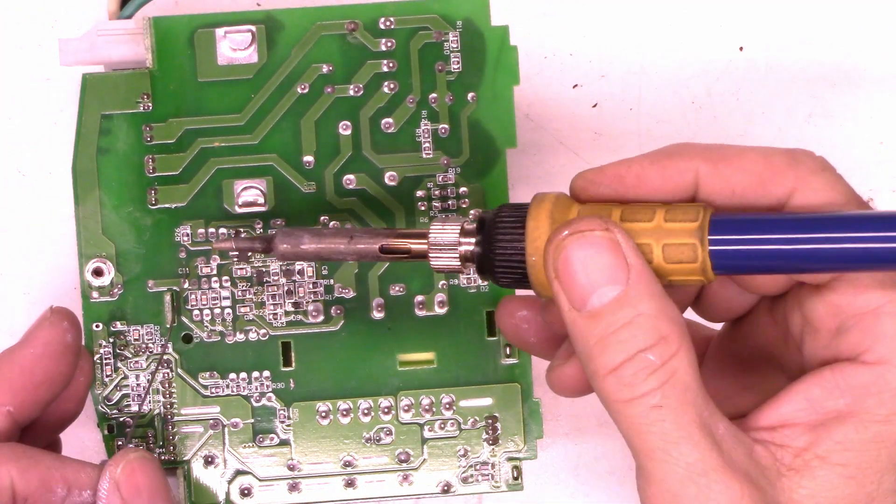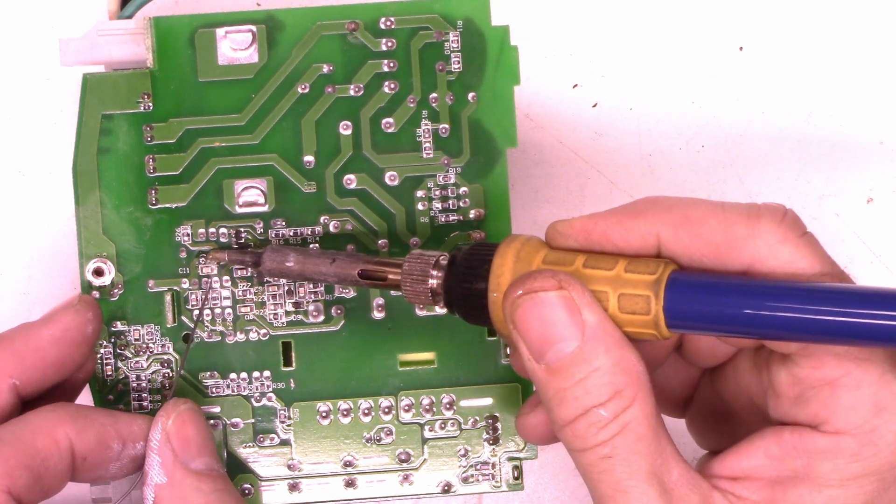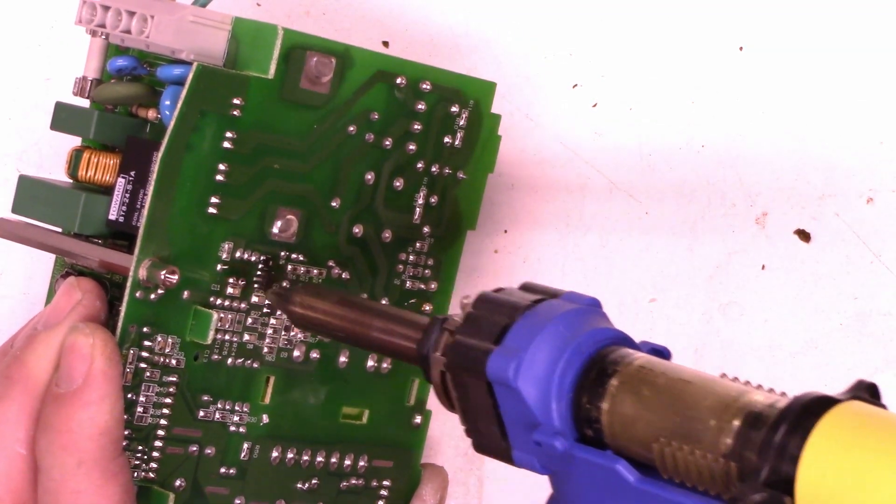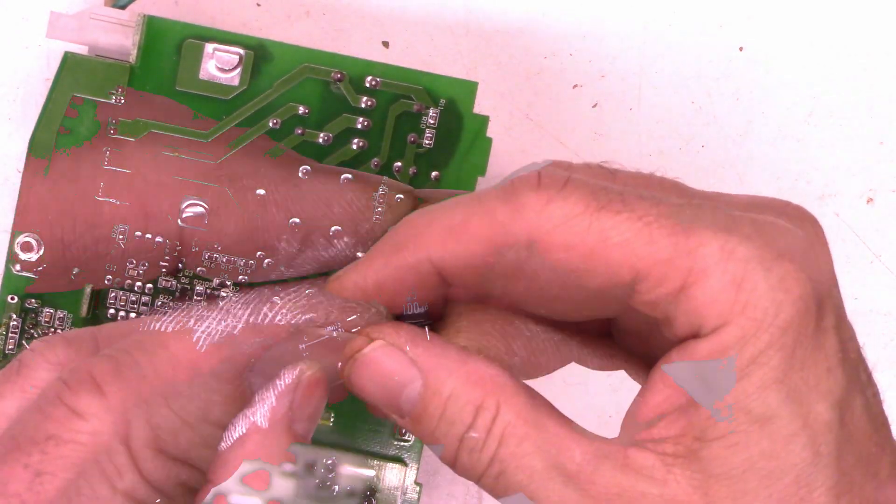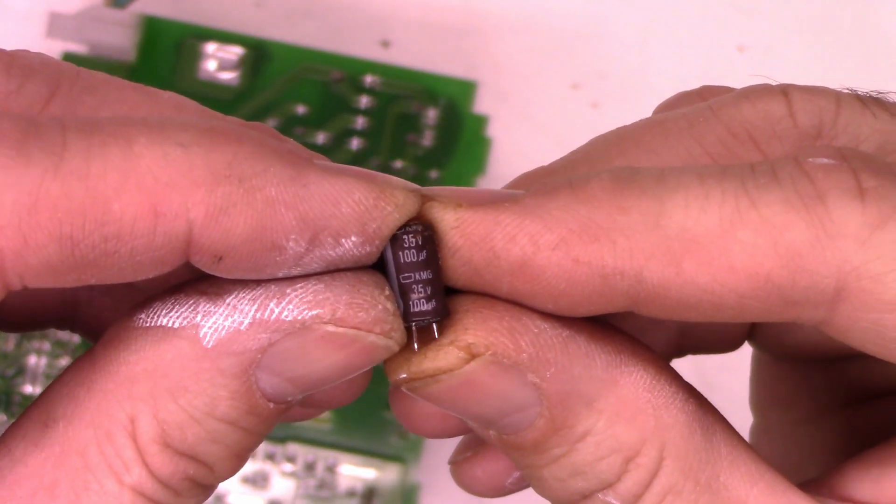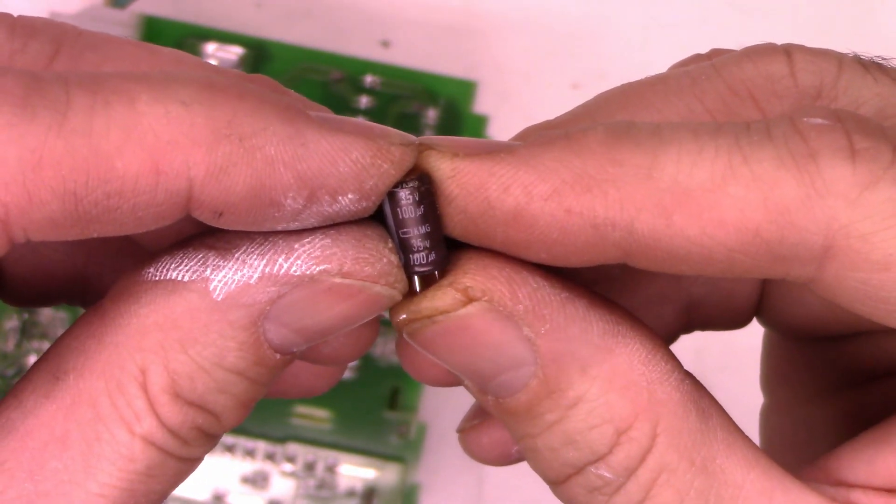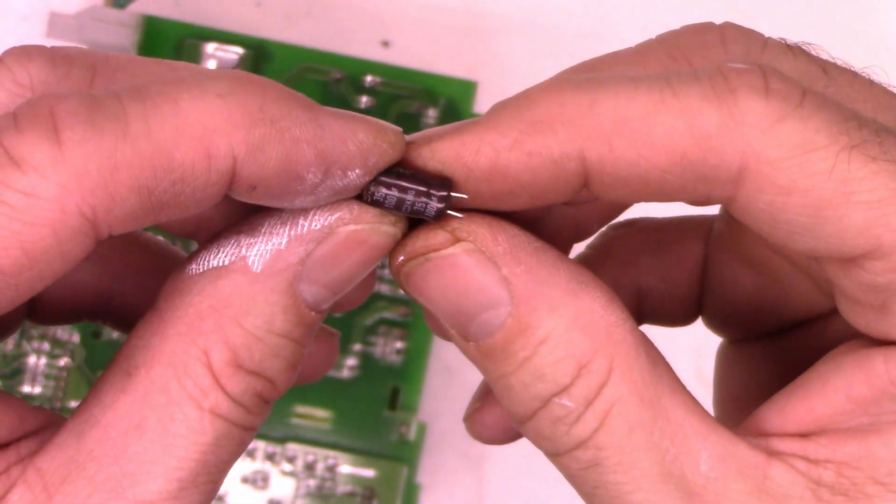Alright, so I'm going to add a little bit of fresh solder here. Well, the capacitor fell right out. So that's a 100 microfarad capacitor at 35 volts. So if I see more than about 1 ohm on this guy, I'm going to suspect it as being bad. So let's go ahead and pop another one in there and see what we get.